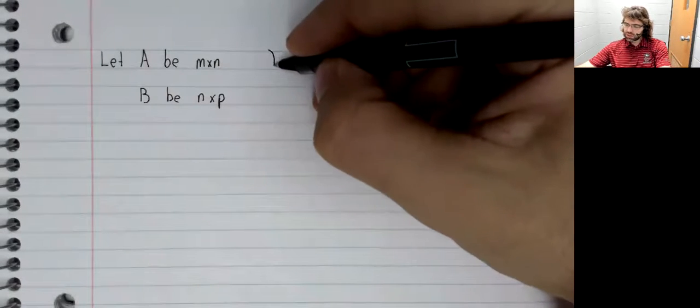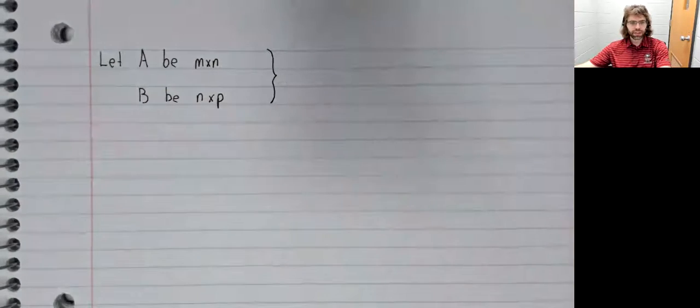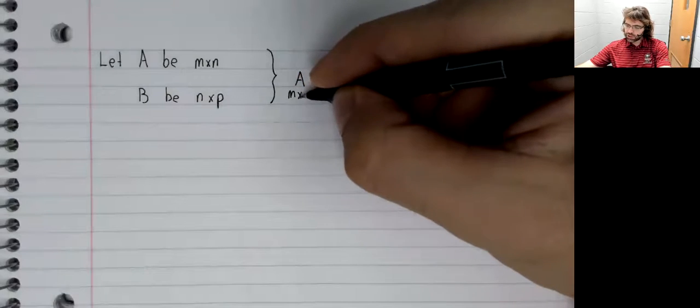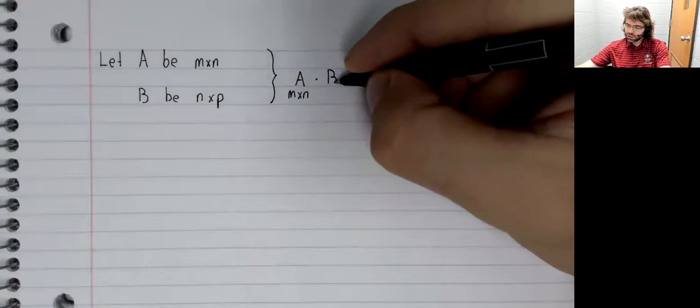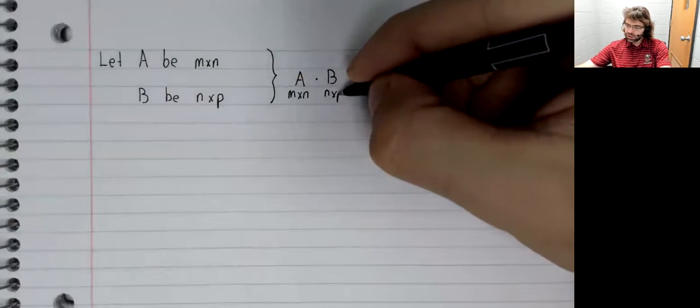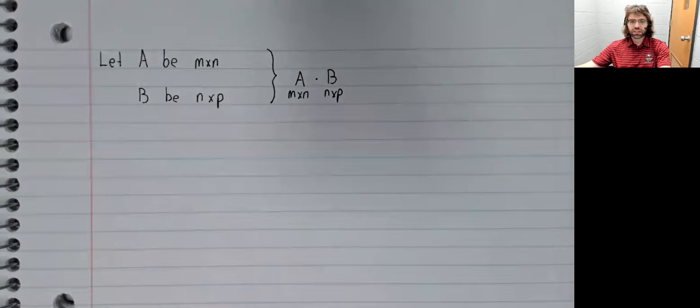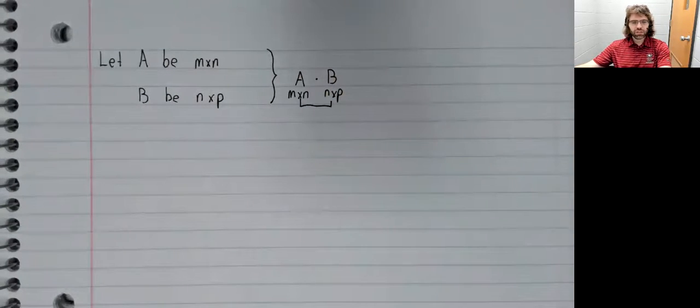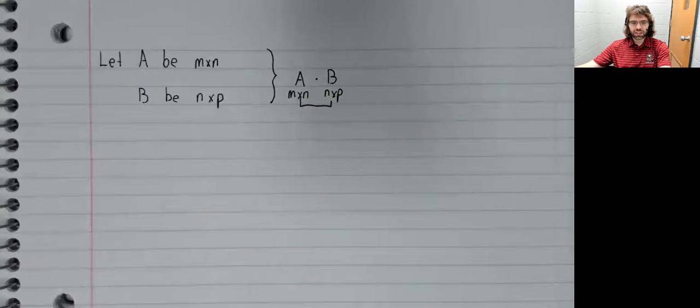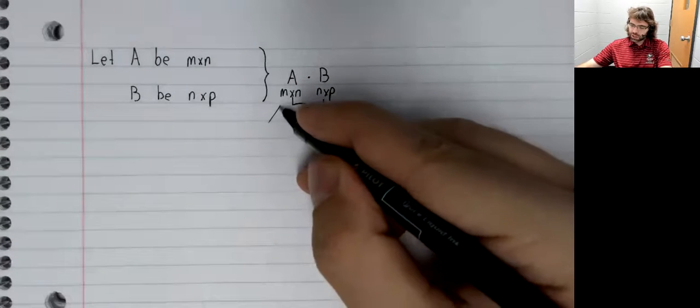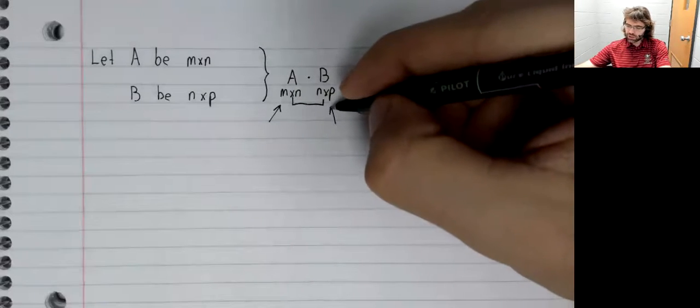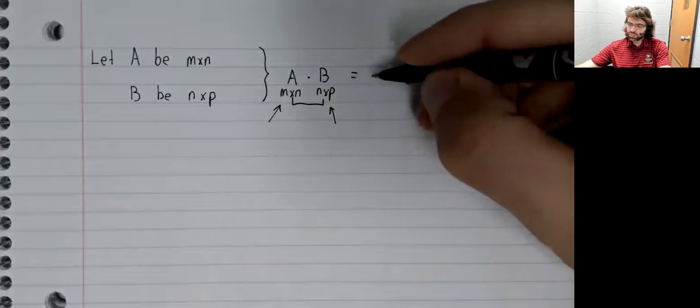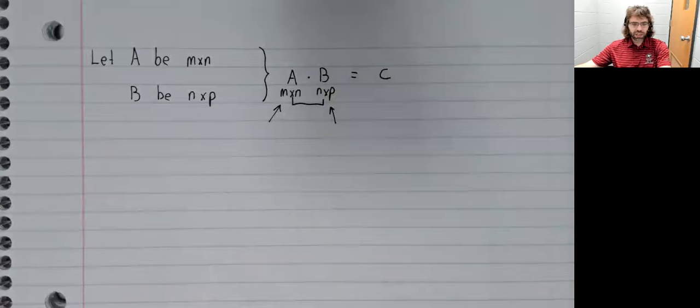We'll start by discussing when we can do this multiplication. It's really the same condition that we had for matrix vector multiplication. These inside dimensions have to be the same, and these outside dimensions give the dimension of the product.